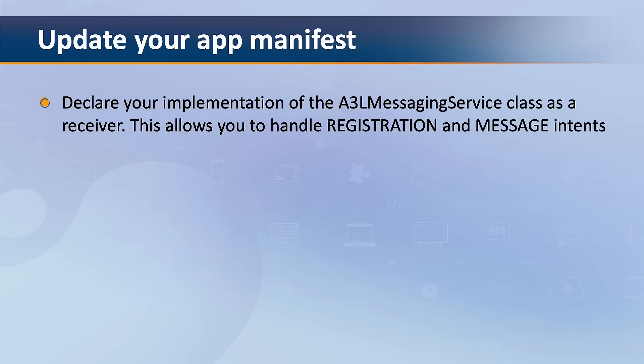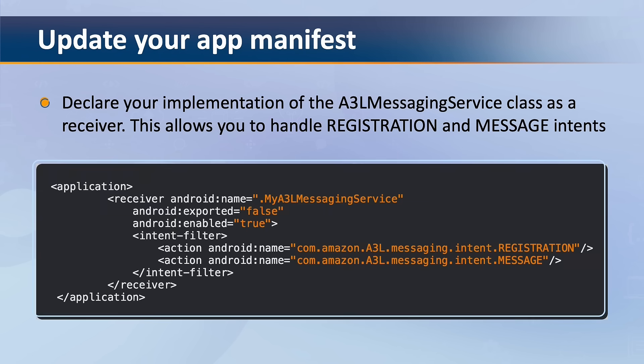Next you must update your app's AndroidManifest.xml file to receive messages. You will need to declare your implementation of the A3L messaging service class as a receiver, as this allows you to handle registration and message intents. The following example uses myA3LMessagingService as a placeholder for your implementation of the A3L messaging service class.